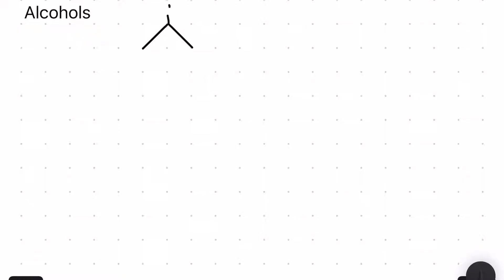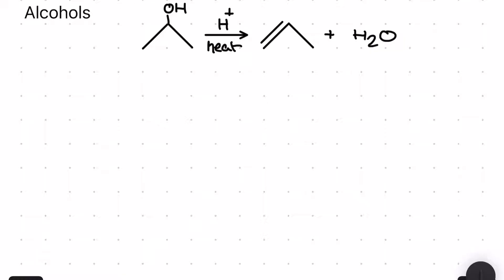Next up we've got probably one of the busiest functional groups in the A-level: the alcohol functional group. For the first reaction, we're taking an alcohol and reacting it in the presence of an acid catalyst of either phosphoric acid or sulfuric acid along with some heat to produce an alkene. One of the two carbons in the double bond had to be the carbon originally bonded to the OH group and an adjacent carbon alongside it. We also produce some water in this reaction.